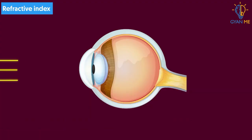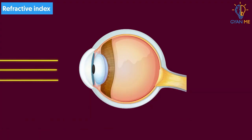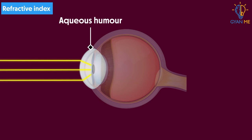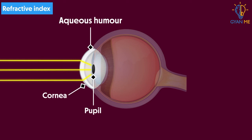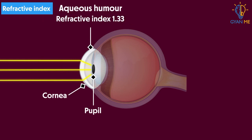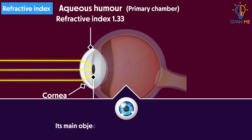From here, light rays enter the transparent fluid called aqueous humor, which is present between the cornea and pupil. Its refractive index is 1.33. It is also called the primary chamber. Its main objective is to refract the light into the pupil.